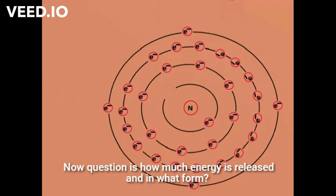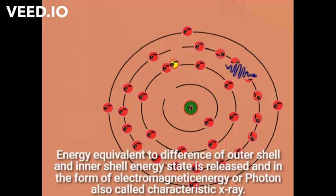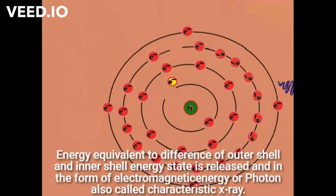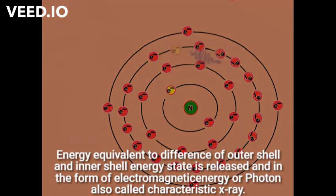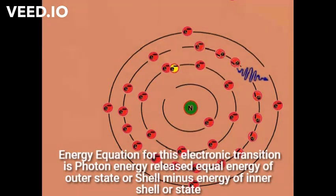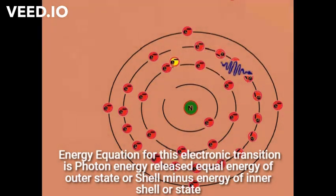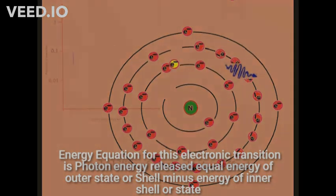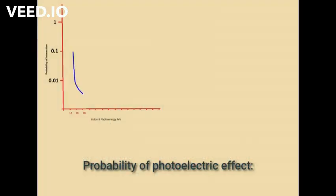The question is how much energy is released and in what form. Energy equivalent to the difference of the outer shell and inner shell energy states is released in the form of electromagnetic energy or a photon, also called a characteristic X-ray. The energy equation for this electronic transition is: photon energy released equals energy of outer shell minus energy of inner shell.